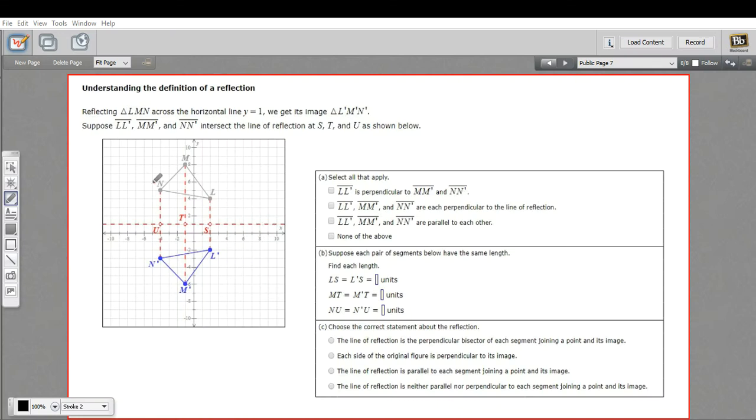In this problem, we've got a diagram of a reflection. This polygon has been reflected over this dashed line at y equals 1. Here's the original figure, here's the image of the figure, and they've connected each of the points with these line segments. We've got some questions to answer that will show if we really understand what's going on with reflections.